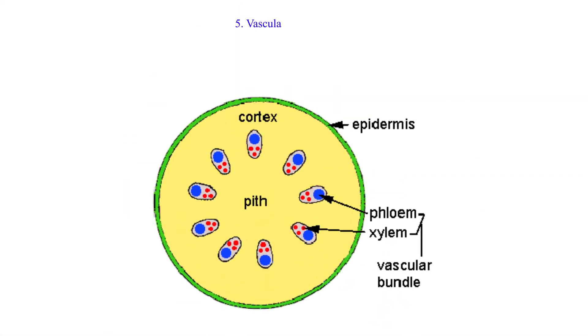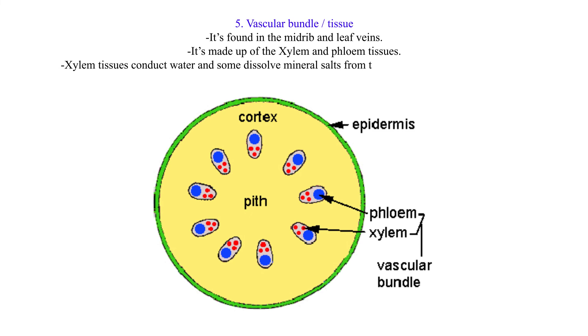5. Vascular Bundle/Tissue. It's found in the midrib and leaf veins. It's made up of the xylem and phloem tissues. Xylem tissues conduct water and some dissolved mineral salts from the roots to other parts of the plant. Phloem translocate manufactured food materials from photosynthetic areas to other parts of the plant.